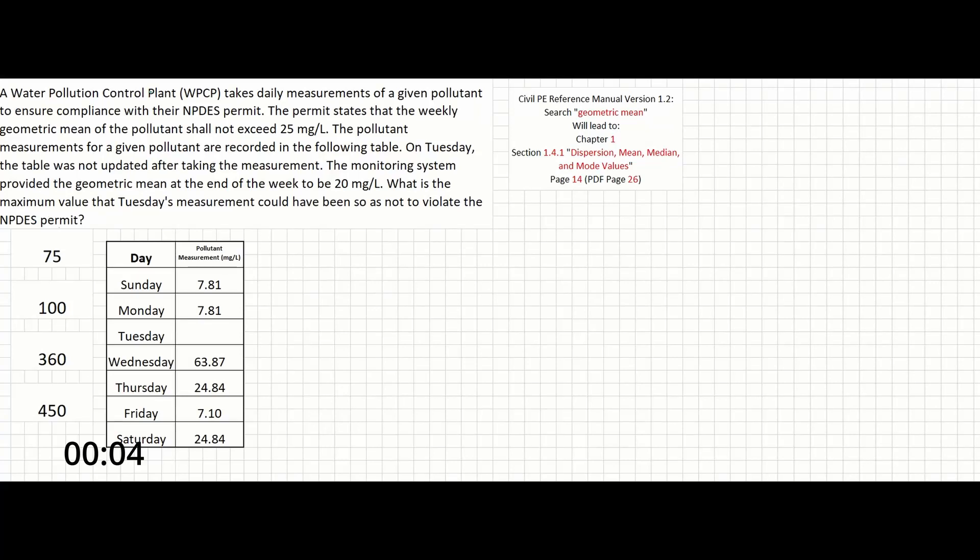In this problem, a Water Pollution Control Plant (WPCP) takes daily measurements of a given pollutant to ensure compliance with their NPDES permit. The permit states that the weekly geometric mean of the pollutant shall not exceed 25 milligrams per liter.